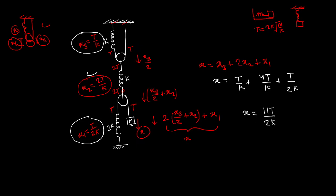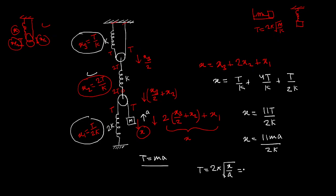Now, how to find the time period? If we release the mass, let's say it accelerates upward with acceleration a. Then T = ma. Substituting into x = 11T/2k gives x = 11ma/2k. We know the time period formula is T = 2π√(x/a), so the time period is 2π√(11m/2k). This is the time period of the oscillation.